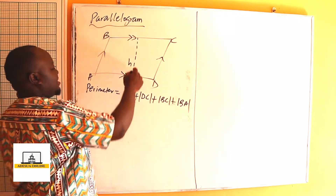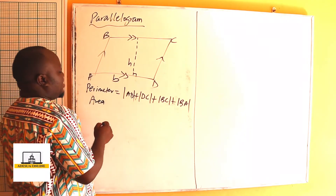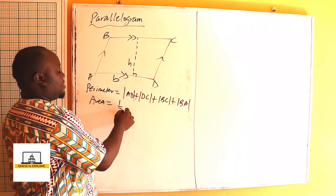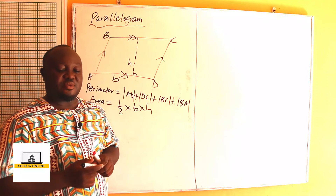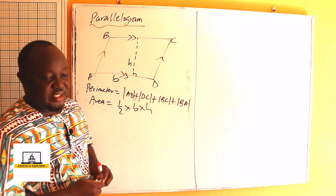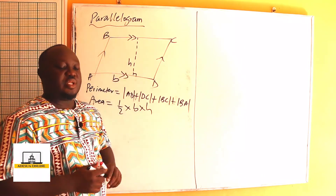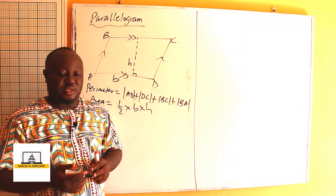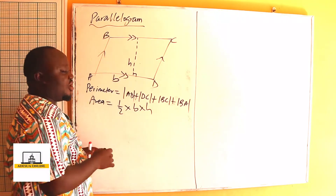Now if this is the height H and this is the base B, the area of a parallelogram is equal to the base times the height. So the area is equal to the length of base AD times the height. Note that the height must be at right angles to the base — the height is the perpendicular height H.